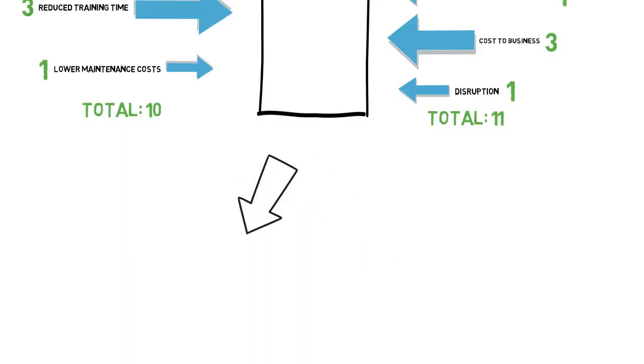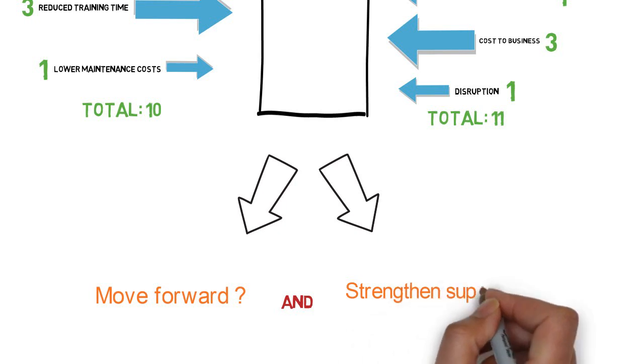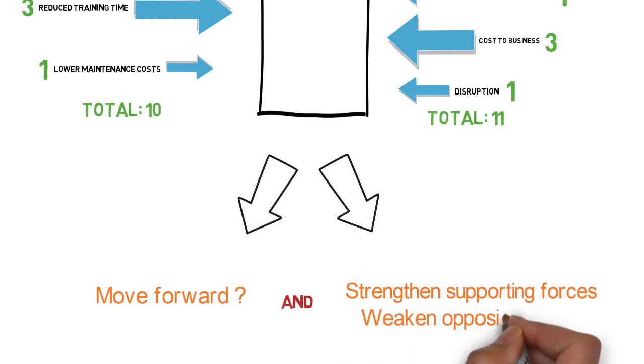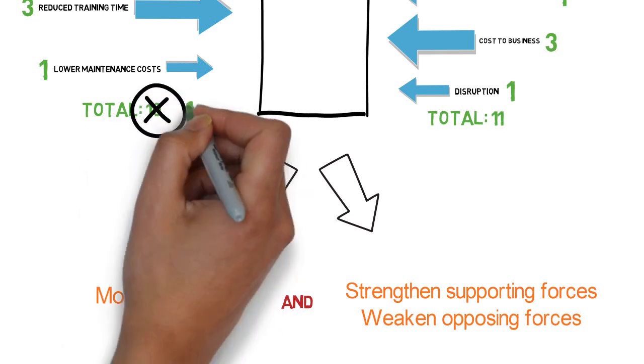Once you've done your force field analysis, you can use it in two ways. To decide whether or not to move forward with a decision or change, and to think about how you can strengthen the forces that support the change and weaken the forces opposing it, so that the change is more successful.